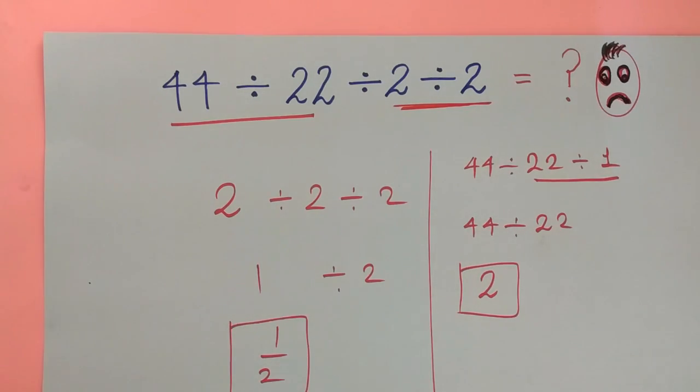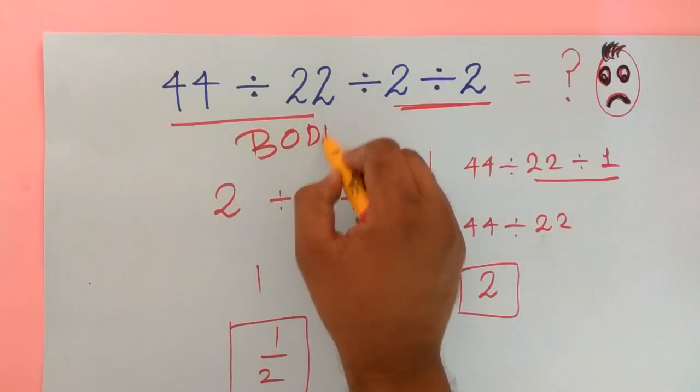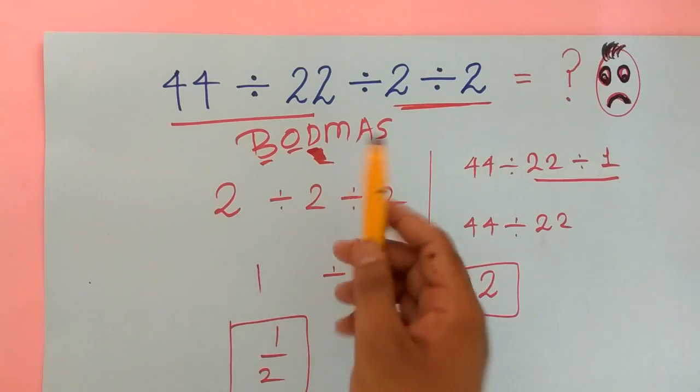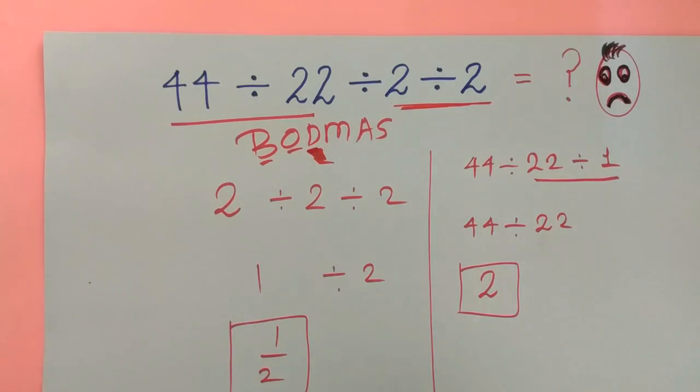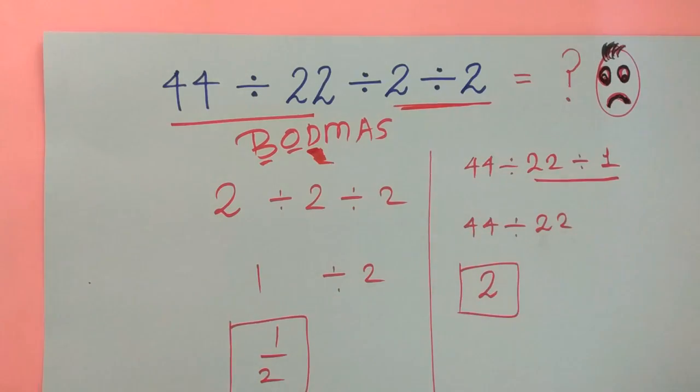This is a question creating confusion for a lot of students. So you need to remember that in BODMAS rule division, but there is no clear-cut description that you should go left to right or right to left for